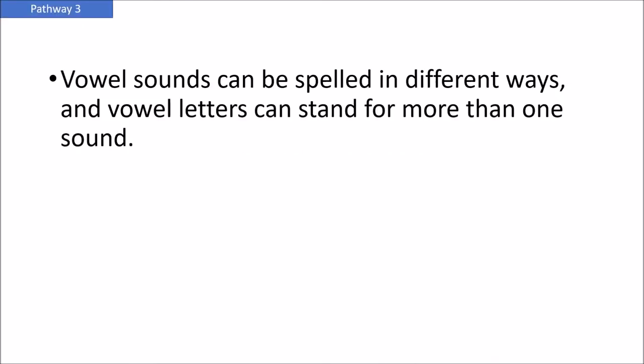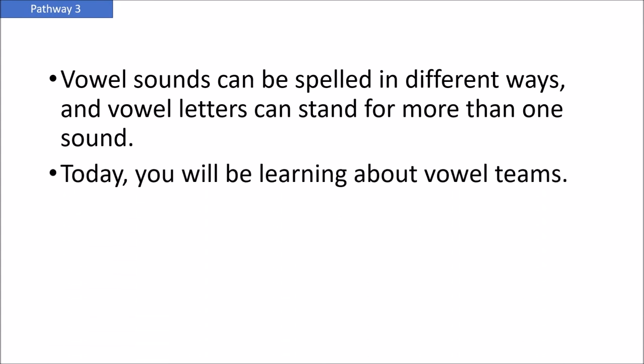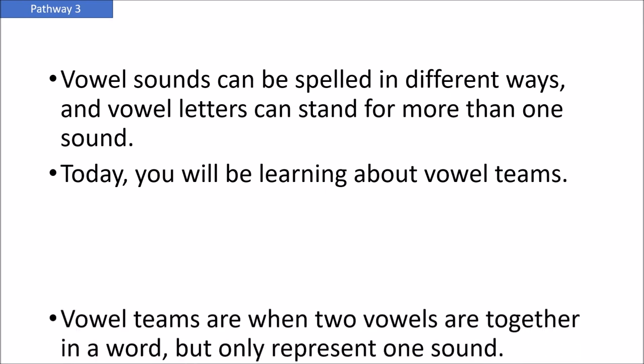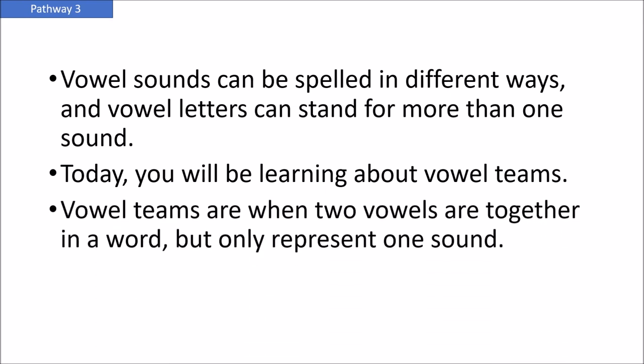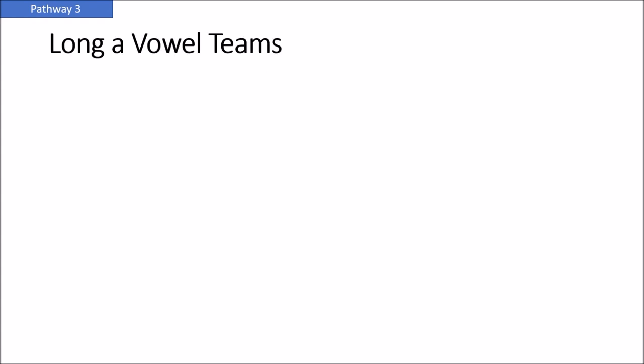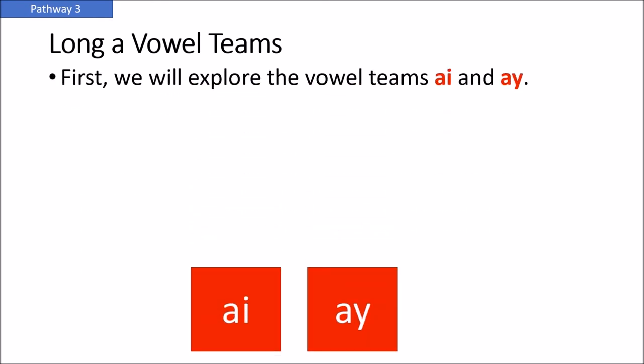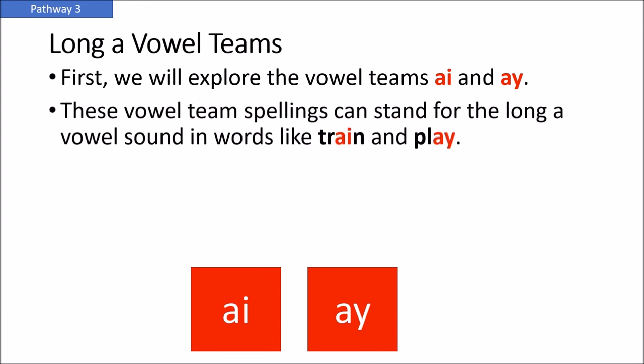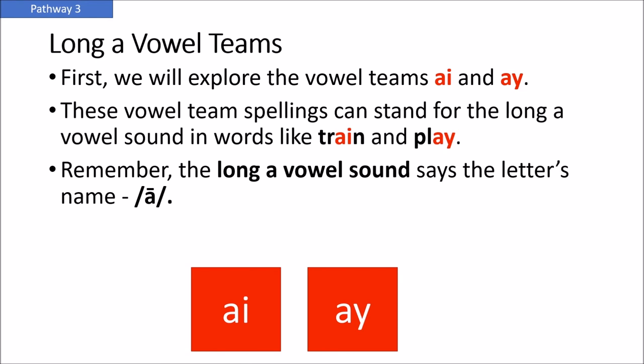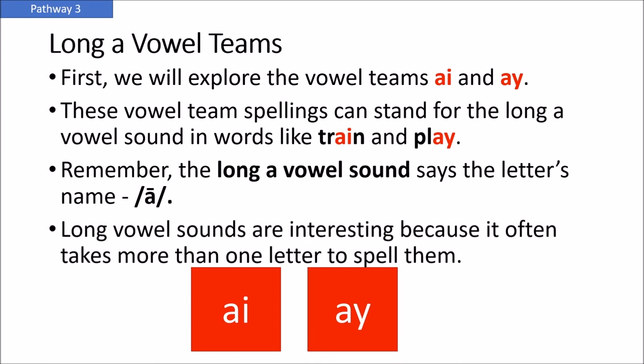Vowel teams. Vowel sounds can be spelled in different ways and vowel letters can stand for more than one sound. Today, you will be learning about vowel teams. Vowel teams are when two vowels are together in a word but only represent one sound. First, we will explore the vowel teams AI and AY. These vowel team spellings can stand for the long A vowel sound in words like TRAIN and PLAY. Remember, the long A vowel sound says the letter's name, A. Long vowel sounds often take more than one letter to spell.